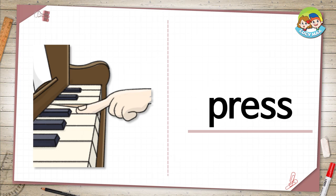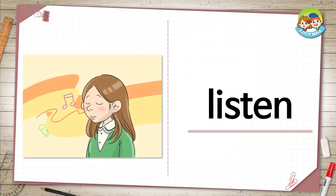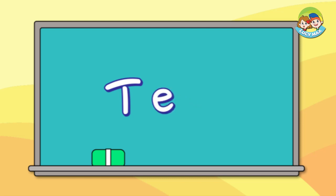Press — a finger is pushing in a piano key. When we push something in, we say we press it. What do you press in an elevator? Yes, you press a button. Listen — when sound comes to our ears, we listen to the sound. In the picture, the woman listens to the music.